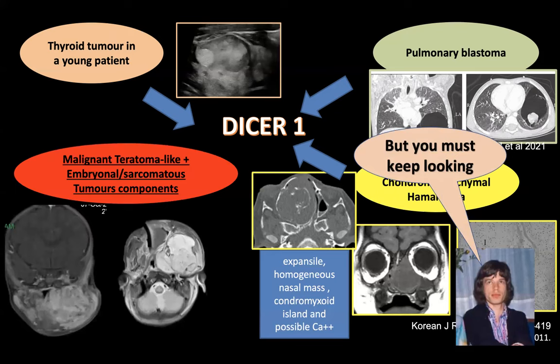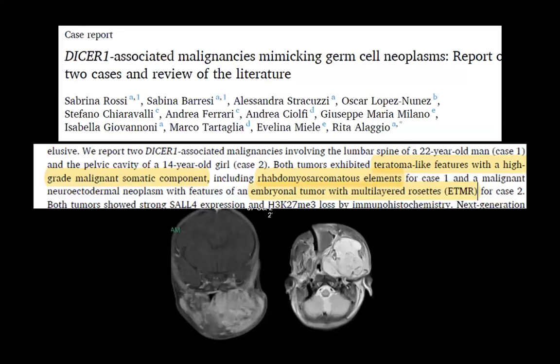I started studying and realized that teratomas in the context of DICER1 mutation are different from what we normally expect in terms of histology and molecular profile. The teratoma-like features are associated with a rhabdomyosarcomatous element and also elements resembling embryonal tumor with multilayered rosettes, normally found in the brain. This may be difficult to diagnose on the spot, but you need to be aware of these differences — it may impact treatment, especially in cancer predisposition syndromes where our knowledge is expanding rapidly.